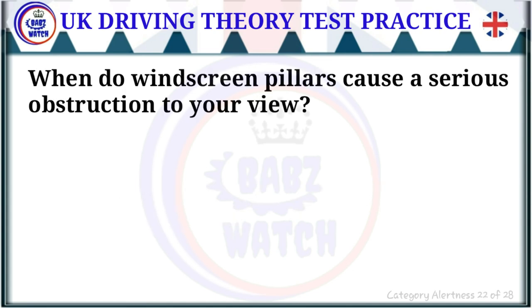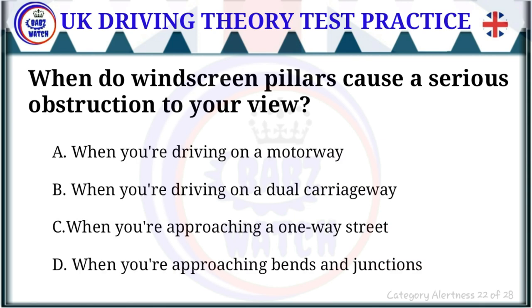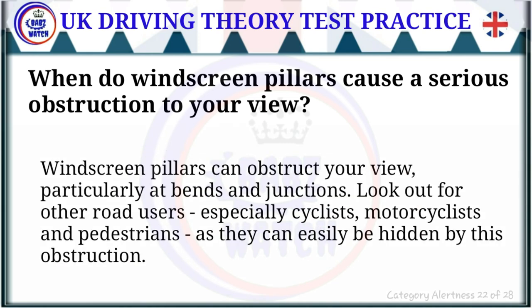Question 22 of 28: When do windscreen pillars cause a serious obstruction to your view? The correct answer is: when you're approaching bends and junctions. Windscreen pillars can obstruct your view particularly at bends and junctions. Look out for other road users, especially cyclists, motorcyclists and pedestrians, as they can easily be hidden by this obstruction.